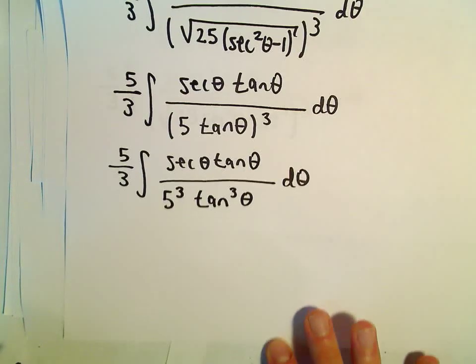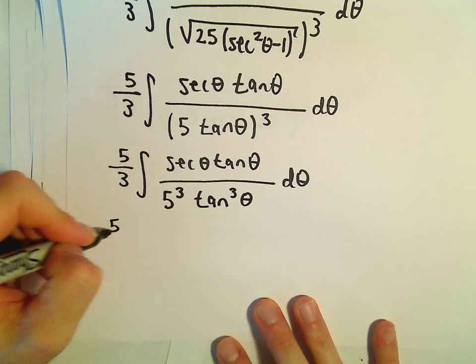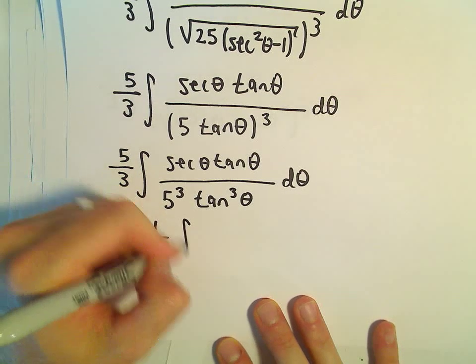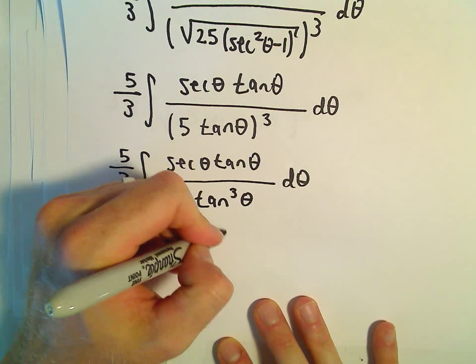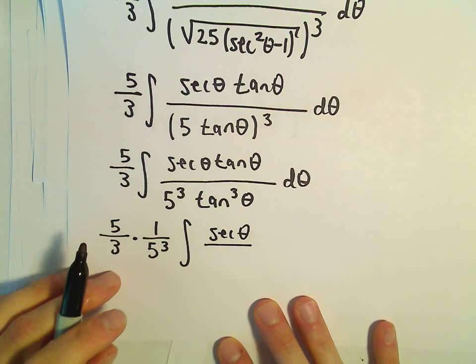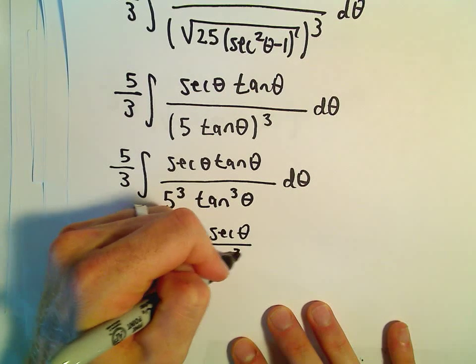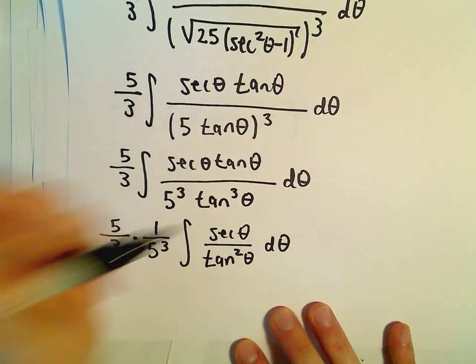So hopefully this will clean up rather nicely. So there's our 5 thirds. We could pull out the 1 over 5 cubed. We would have secant theta. But let's see, I guess when we reduce tangent theta over tangent cubed, we'll just be tangent squared theta d theta.